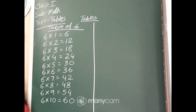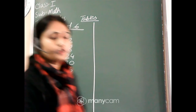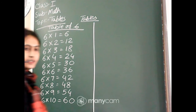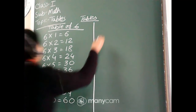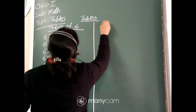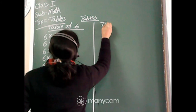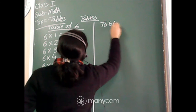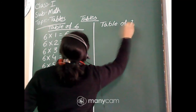So you all please note down in your notebook — table of 6. Now, on the right side, write down table of 7.